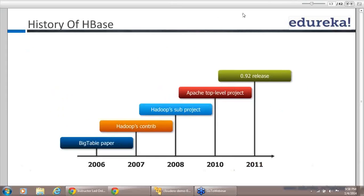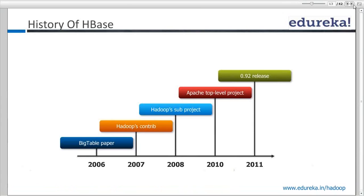This is the history of HBase. The BigTable paper was released in 2006. HBase was started in 2007, then 2008 and 2010, and finally in 2011, version 0.92 of HBase was released.